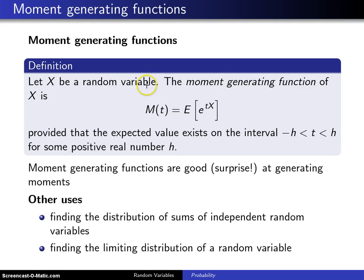Let x be a random variable. Again, could be discrete, might be continuous. The moment generating function of x is, and you can see that the moment generating function is defined as an expected value. And this notation here is pretty universal. M of t is equal to the expected value of e to the t times x.